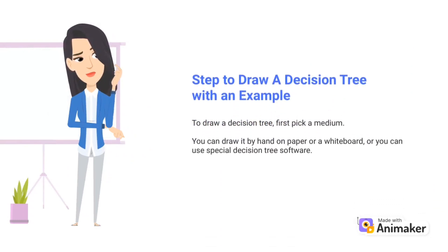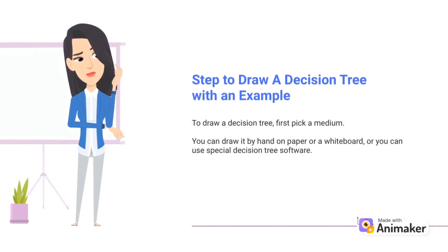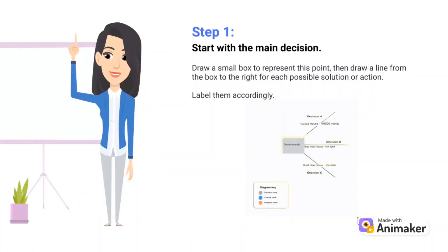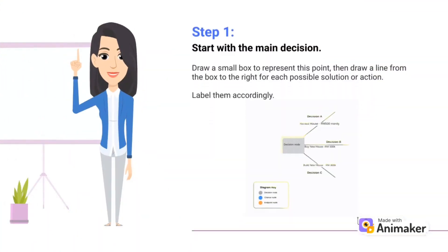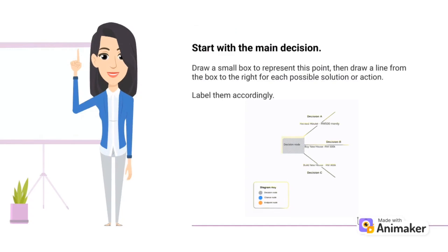How do you draw a decision tree? To draw a decision tree, first pick a medium. You can draw it by hand on paper or a whiteboard, or you can use special decision tree software. First, start with the main decision and draw a small box to represent this point. Then draw a line from the box to the right for each possible solution or action, and label them accordingly.